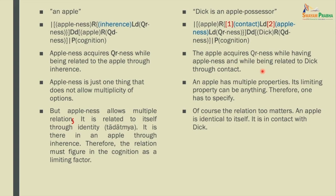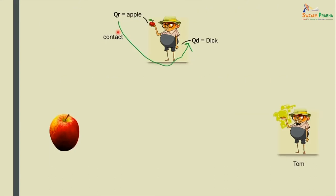Why are the relations many? Because the apple is identical to itself, the apple is in contact with Dick, and the apple is a property of Tom (Dick's twin brother) through the relation of ownerhood (swamitwa). So it has various relations, and one of them is chosen by the cognition — that is, contact. There are two different things here. We want to see a pictorial presentation. We are not snatching the apple from Dick — this is a different apple, and this is Tom, Dick's brother, who owns it.